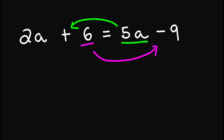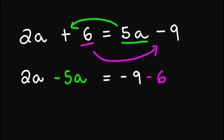So this becomes 2a. Again, when we move a term to another side of the equation, we convert the sign. So this becomes minus 5a. This is equal to negative 9, and converting the sign, this is negative 6. Simplifying, we'll have negative 3a on the left side and negative 15 on the right side.